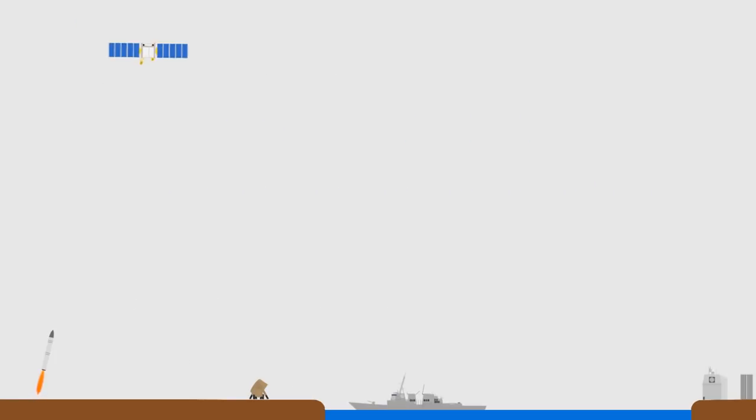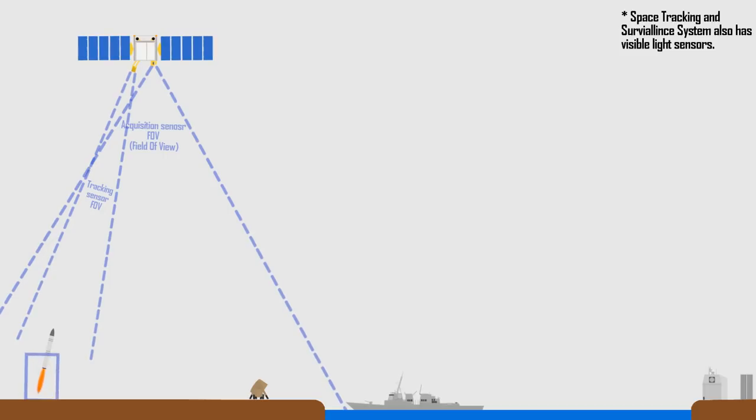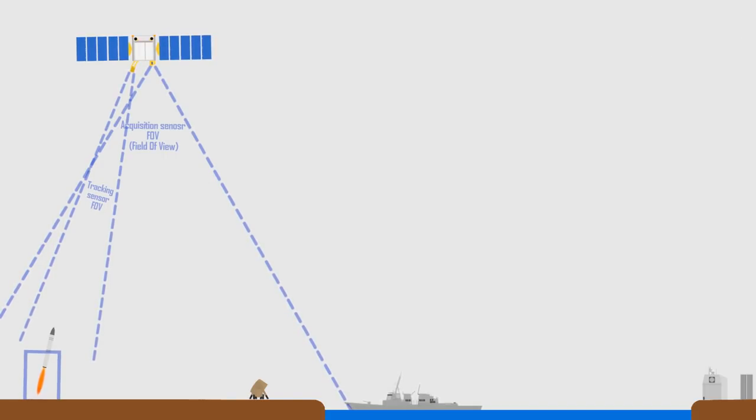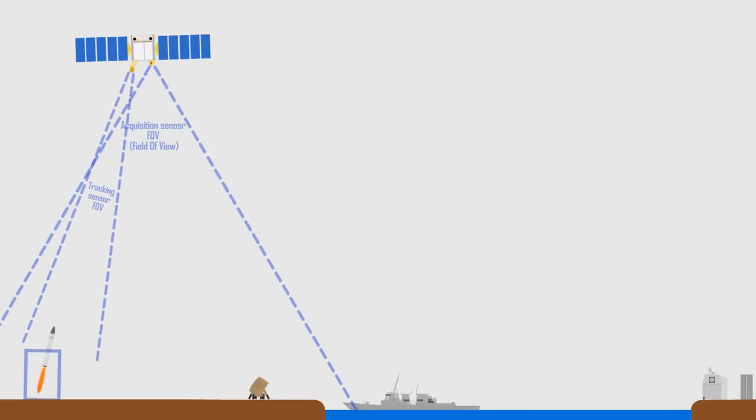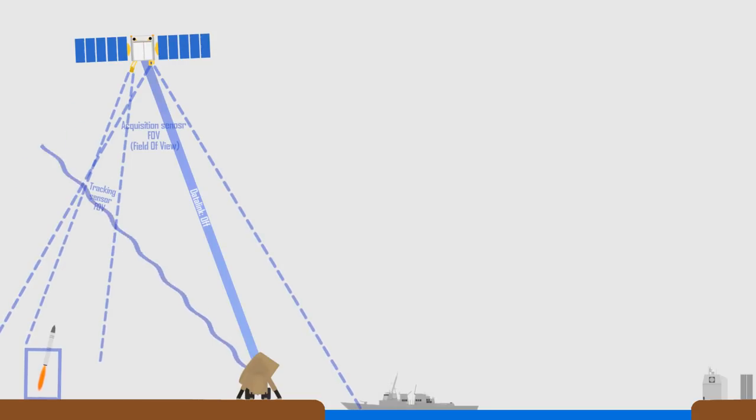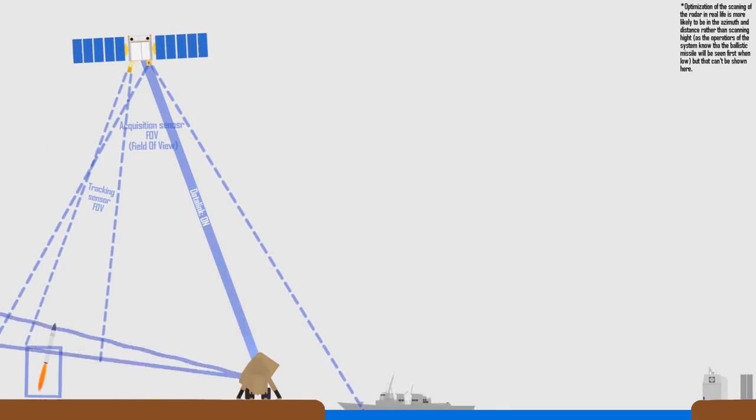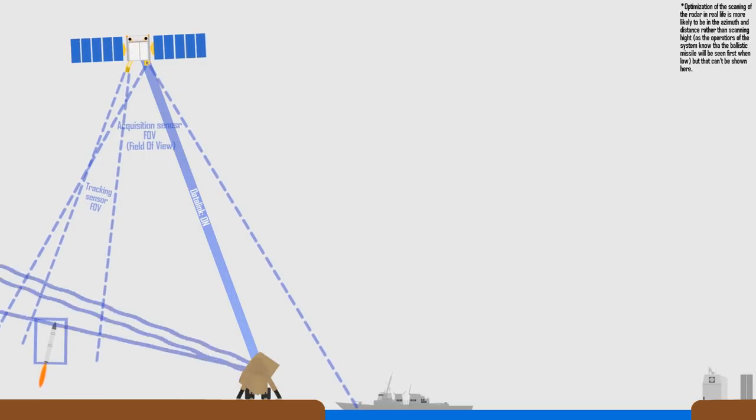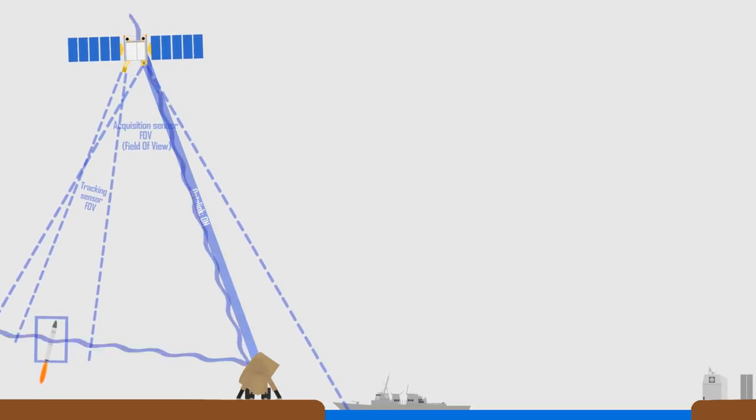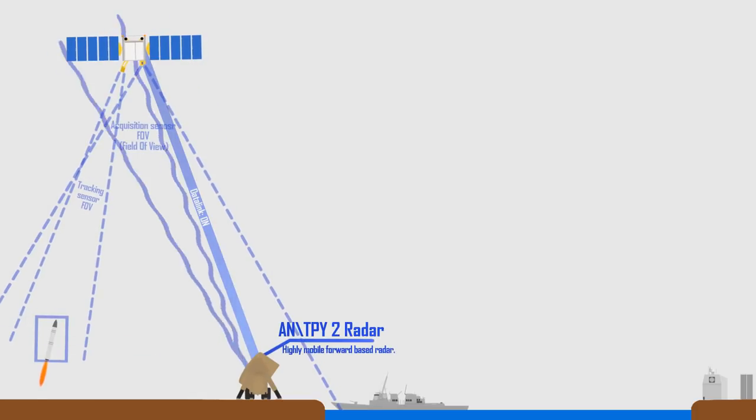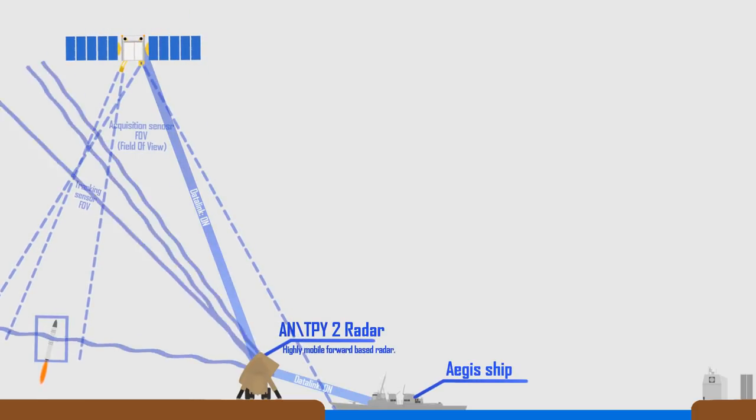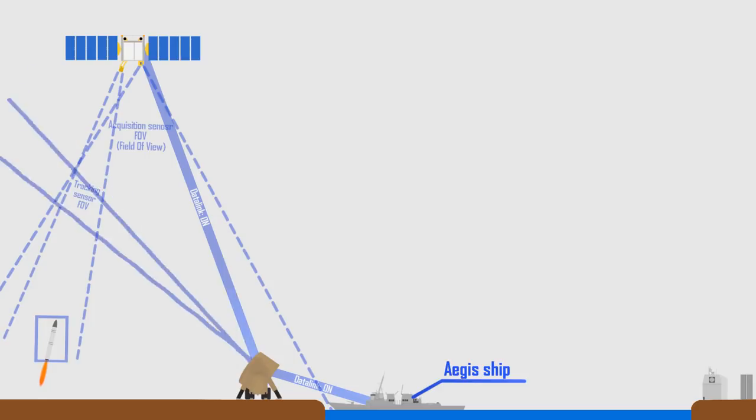A satellite equipped with infrared or heat sensor detects the hot missile very early in its flight. With this information, the settings of the radars of the defense are tweaked to detect the enemy missile optimally. As the missile enters the detection range of the ANTPY-2 radar, the data is transferred to the Aegis ship stationed in the sea behind the ANTPY-2.